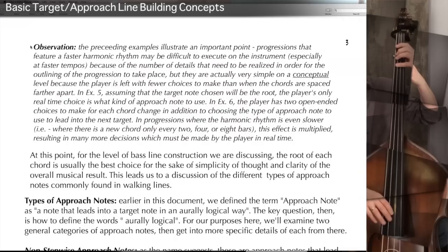Progressions that feature a faster harmonic rhythm may be difficult to execute on the instrument, especially at faster tempos — like rhythm changes at 308 — but they're actually very simple on a conceptual level. When there's a lot of chords, it's difficult to make all of those changes in time, but it's very easy to think about what you want to play. Assuming the target note chosen is the root, the player's only real-time choice is what kind of approach note to use. But where there's one chord per bar, the player has two open-ended choices for each chord change in addition to choosing the approach note type.